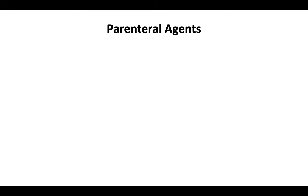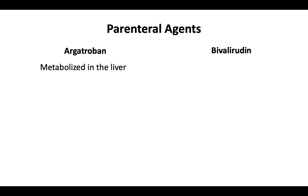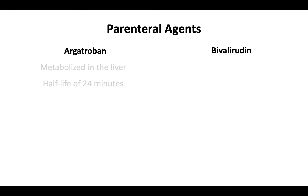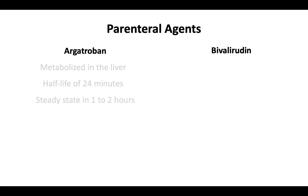The available parenteral agents include argatriban and bivalirudin. Argatriban is metabolized in the liver. It has a half-life of about 24 minutes. Once initiated, argatriban achieves steady state in about 1 to 2 hours. When the infusion is stopped, the APTT normalizes within 2 hours.